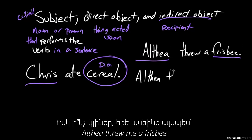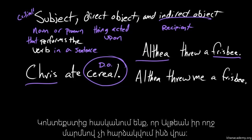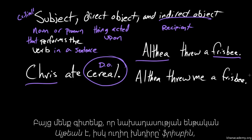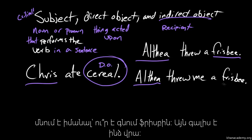But what if we have this sentence? Althea threw me a frisbee. Well, so we know from context, because we have the word frisbee in here, that Althea is not hurling me bodily, right? She's not chucking me across a field for a dog to catch. But we do know that the subject of the sentence is Althea. And we know that the direct object of the sentence is frisbee. But where is that frisbee going? Well, it's going to me.